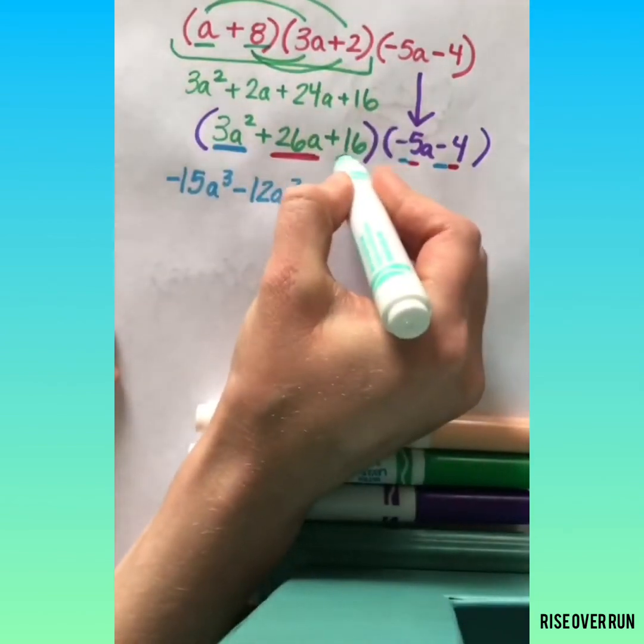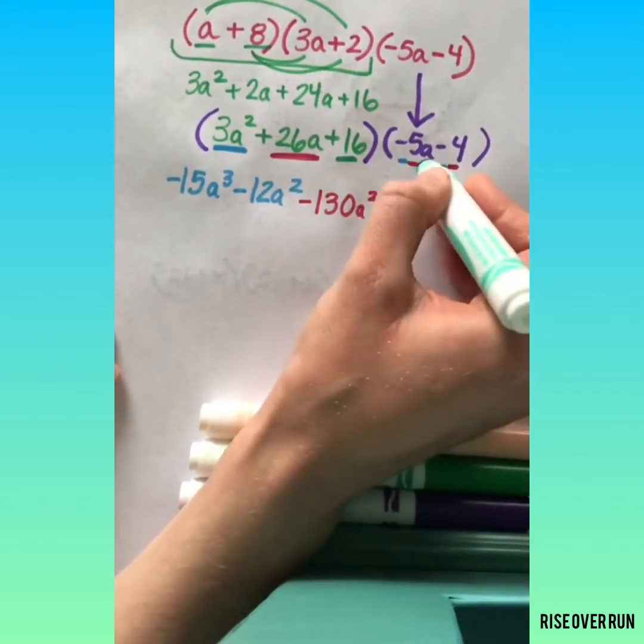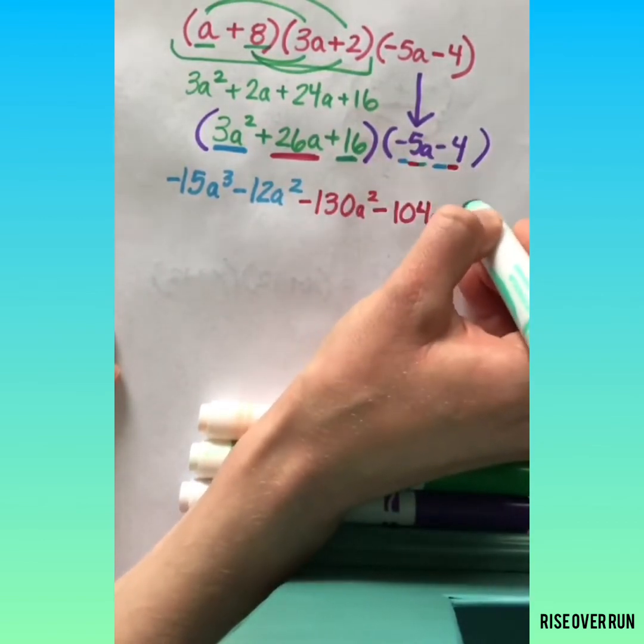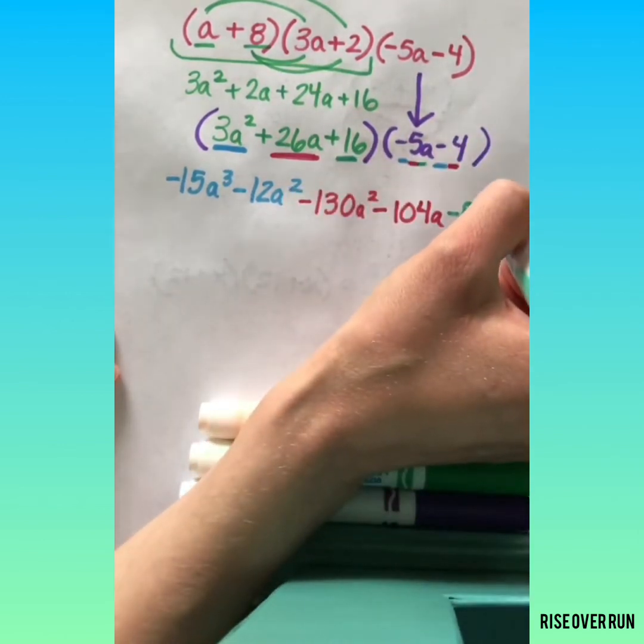And then I'll multiply 16 by both of these terms. 16 times negative 5A is negative 80A. And 16 times negative 4 is negative 64.